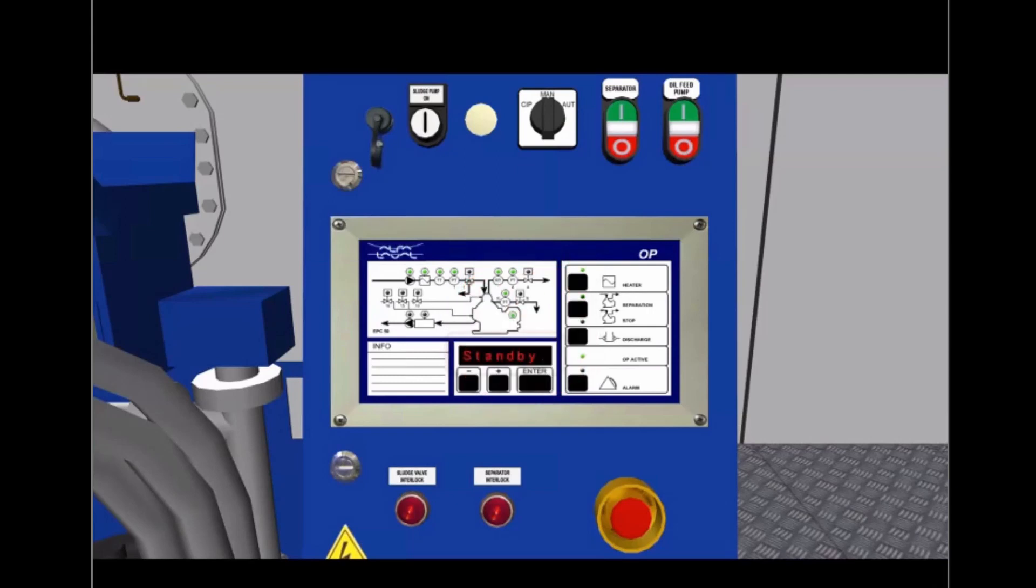When the separator has reached the correct speed and the oil is at the correct temperature, standby is shown on the display. Press the separation button on the operator panel to start the separation process. You can use the subtitles to see a recap of what was said in the video. But if you want to see the video again, you can replay this page and review any part of the process.